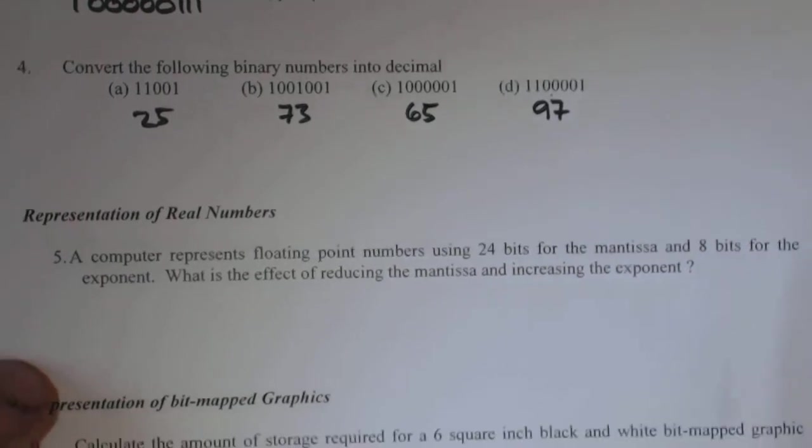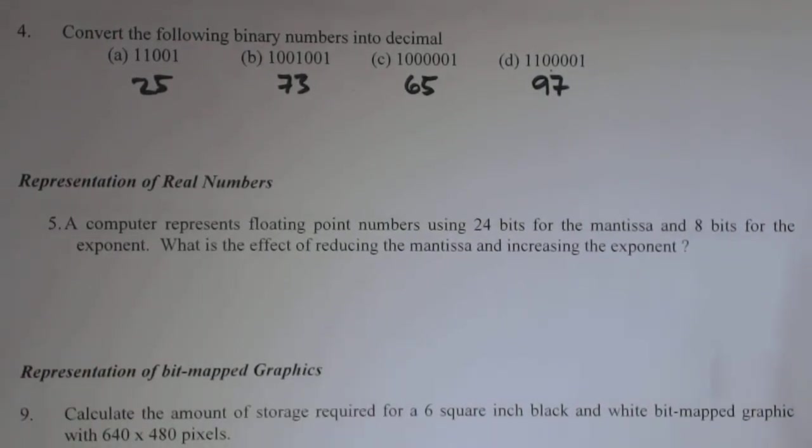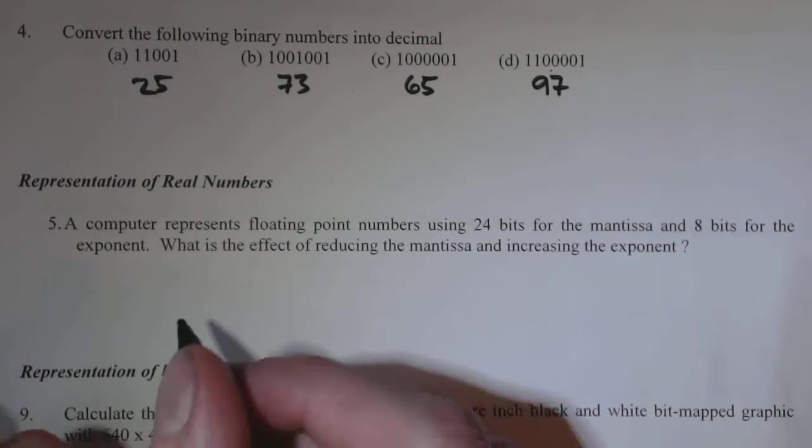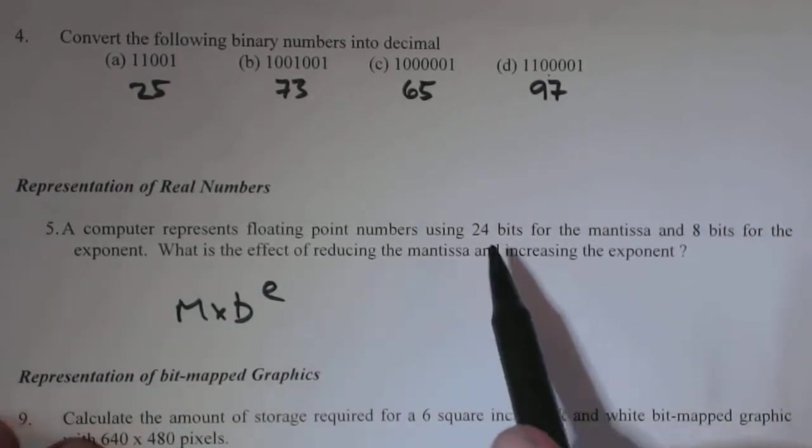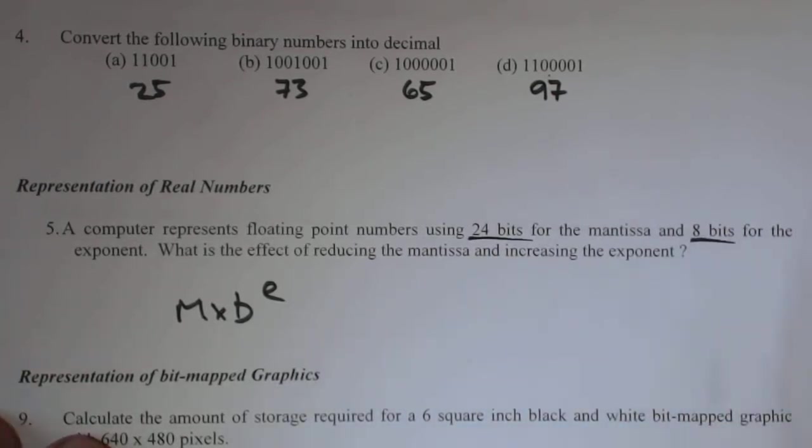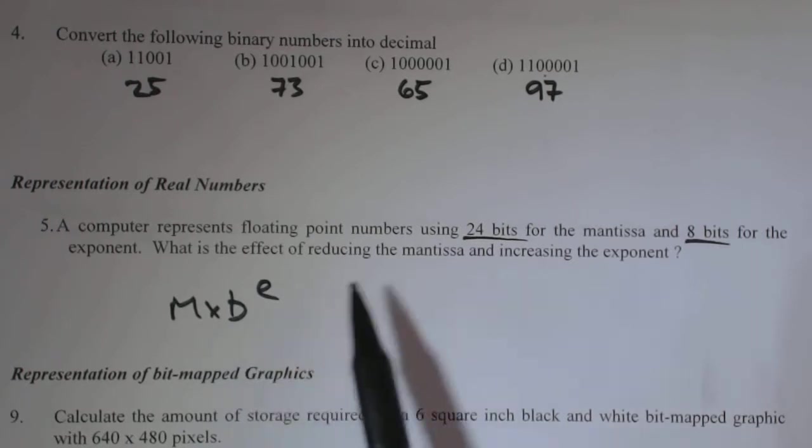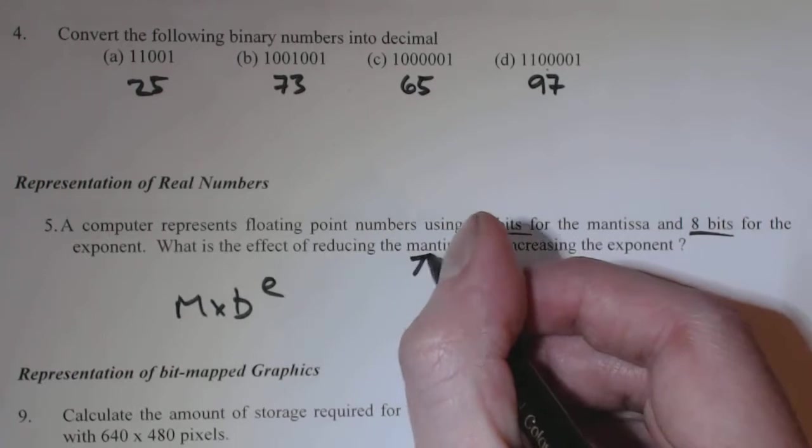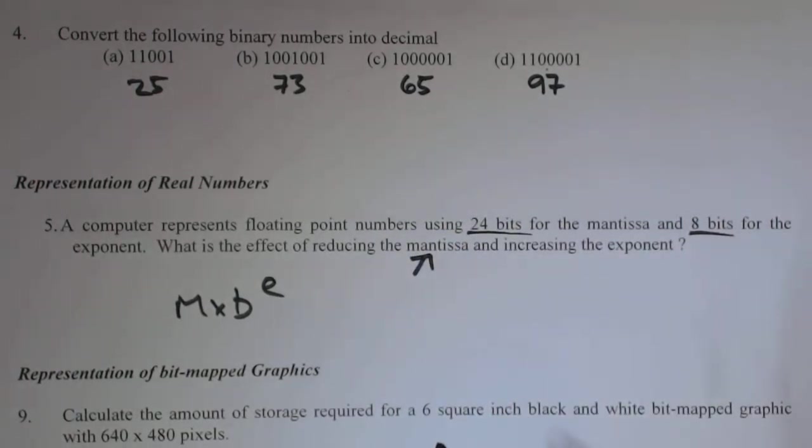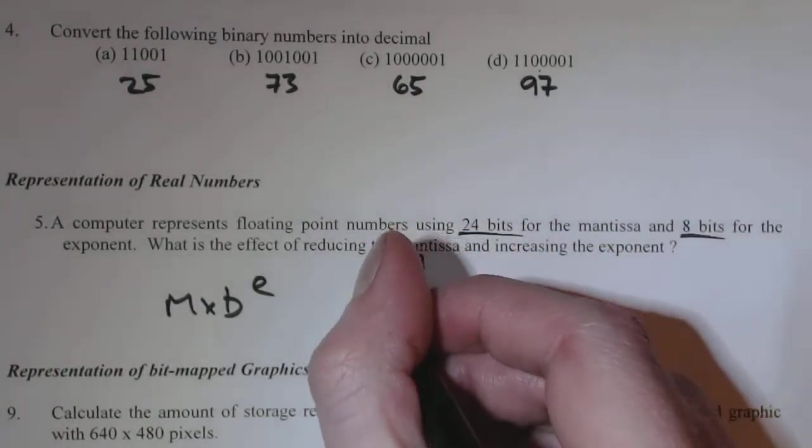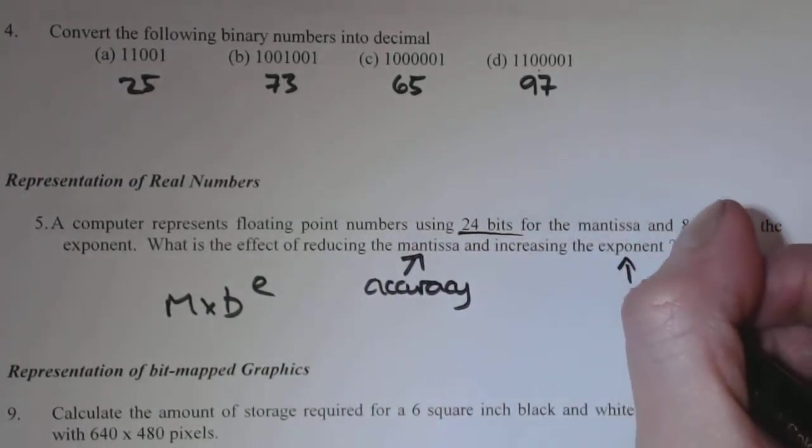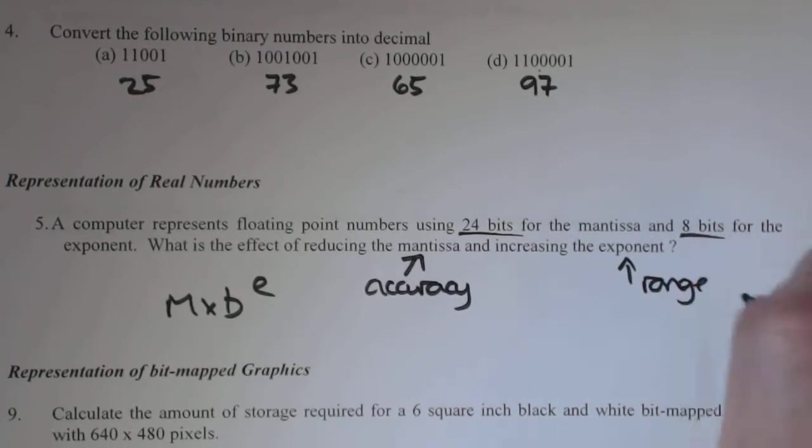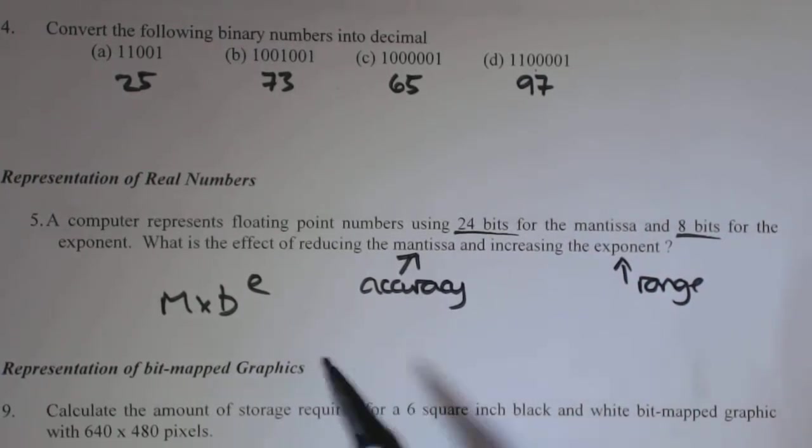So we've now got a situation in which they're asking about real numbers. So that's when we have your mantissa times your base next one. And what you've got here is you've got 24 bits for the mantissa, 8 bits for the exponent. If you reduce the mantissa and increase the exponent, remember your mantissa, that's good for your accuracy.